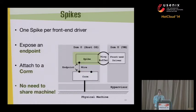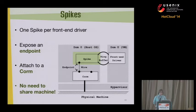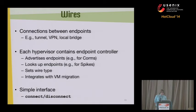Spikes are the back-end driver part, connected directly to the front-end drivers in the guests. There is one spike per guest virtual device. The spikes also expose endpoints that look like virtual network interfaces, and they are attached to QORMs using things called wires. The important thing is that spikes and QORMs do not need to share the physical machine. Wires are just connections between endpoints, and there can be a number of different ways they can be connected: a network tunnel, a VPN, or a local bridge, depending on the environment.